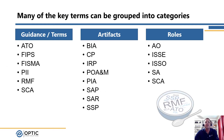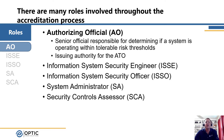Those are the key artifacts used within the Risk Management Framework. Moving on to roles — the first role is the Authorizing Official, or AO. Authorizing Officials are senior officials within the organization responsible for issuing the ATO. They have the authority to either authorize systems to operate or deny them from operations if the risk is deemed unacceptable — for example, if required security controls are not in place.